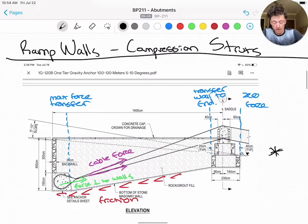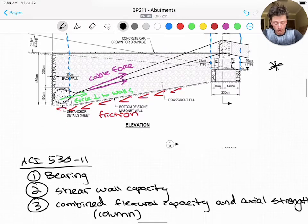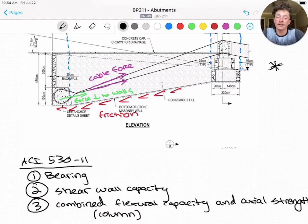Now, getting into solving the problem, we're going to consult ACI 530-11, the 2011 version of the ACI 530 building code, which is the building code requirements and specifications for masonry structures. This code prompts us to check three things.